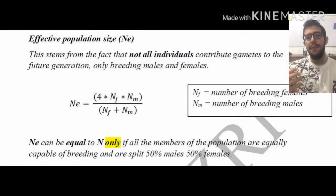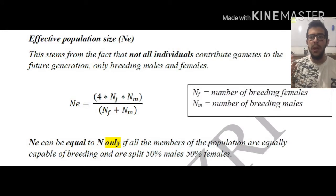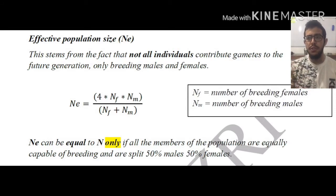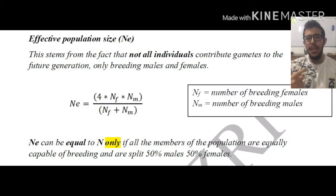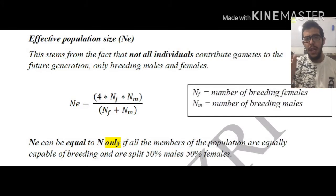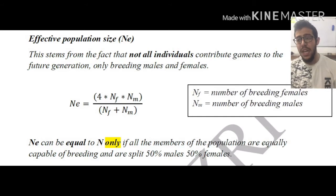Now, in this very short video, we're going to be talking, as mentioned before, about the effective population size, referred to as NE. This stems from the fact that not all individuals in a population are going to be contributing gametes to the future generations — only breeding males and females. Offsprings will not be able to breed; therefore, if we count them, we are simply skewing the numbers in a way that is very inaccurate. So, in order to represent the most accurate numbers, we can take the effective population size into consideration.